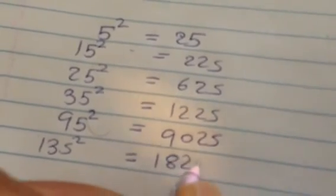And 135 squared is 13 times 14, 182, 25, so 18225.